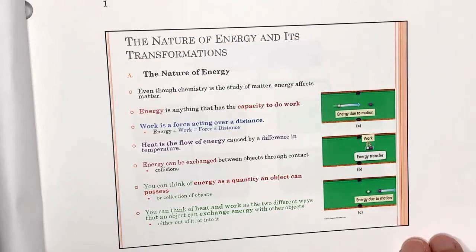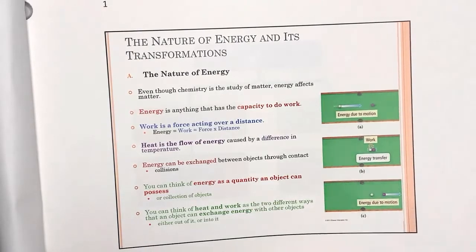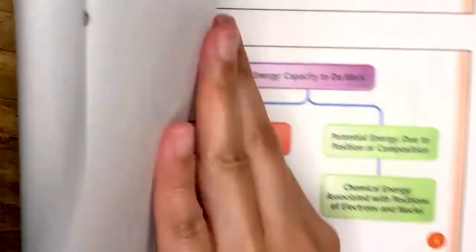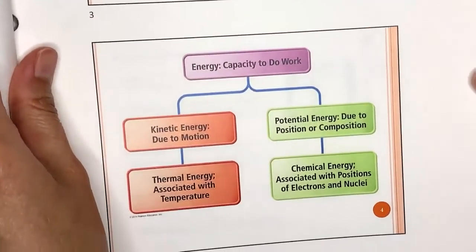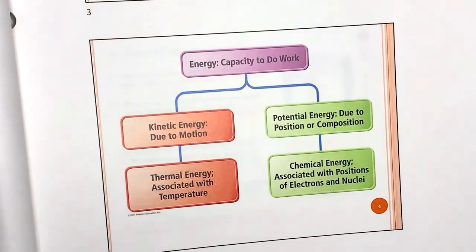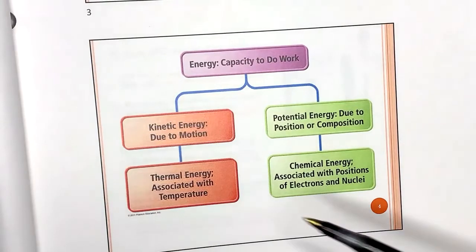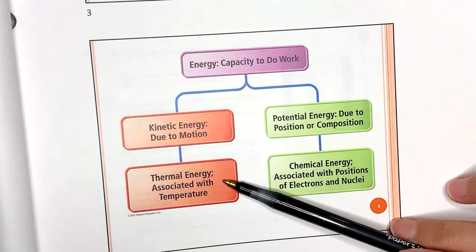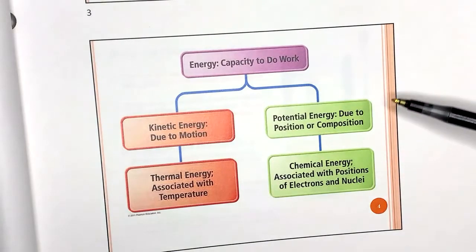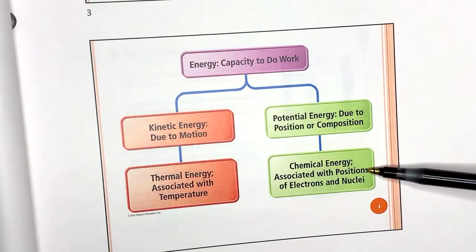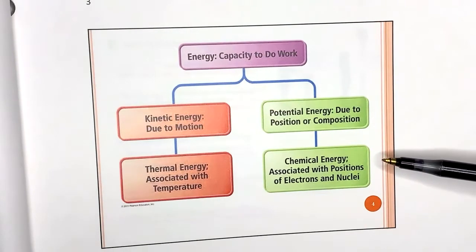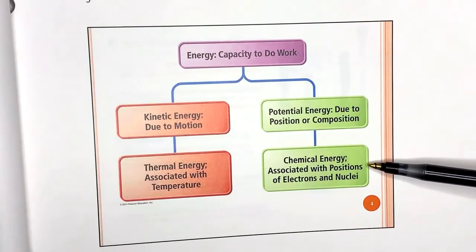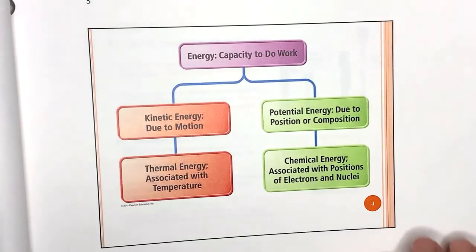We have different kinds of energies to focus on: kinetic energy, which includes thermal energy related to heat and temperature, and potential energy, which focuses on chemical potentials — the energy within atoms, electrons, and nuclei.